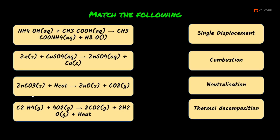Match the following. First equation: NH₄OH + CH₃COOH → CH₃COONH₄ + H₂O. NH₄OH is ammonium hydroxide — a base. CH₃COOH is acetic acid — an acid. Acid plus base gives salt and water. So this is a neutralization reaction.